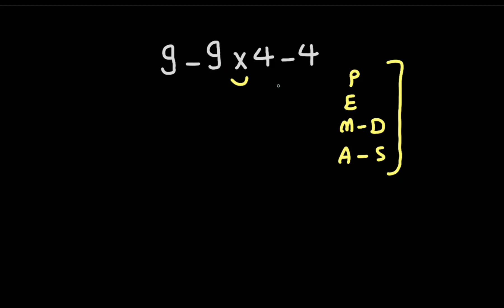So we have to solve this multiplication first. Now 9 times 4 gives us 36.